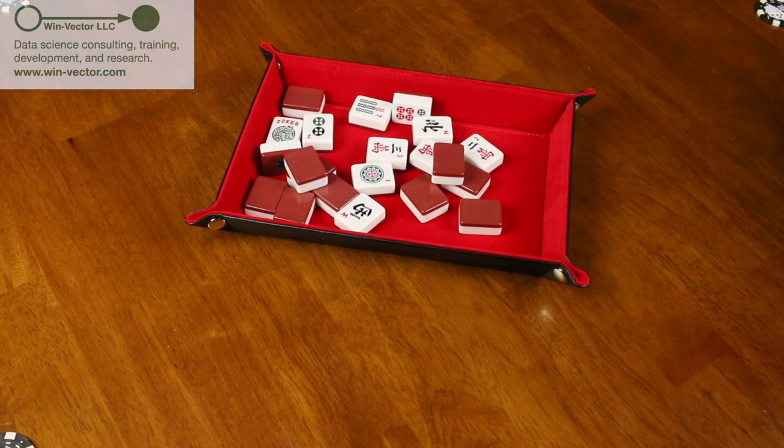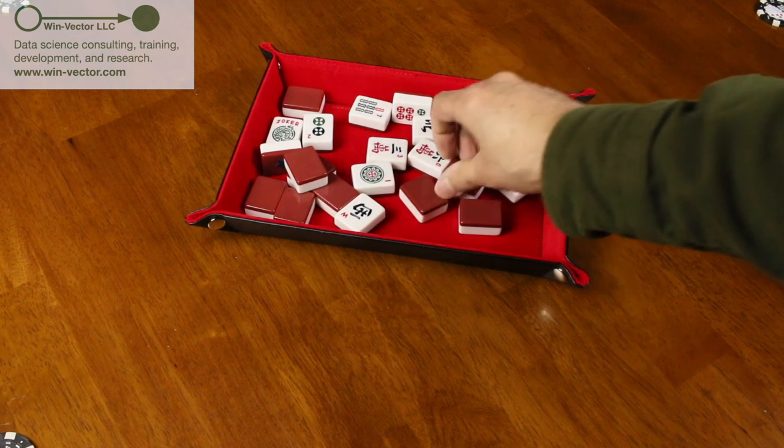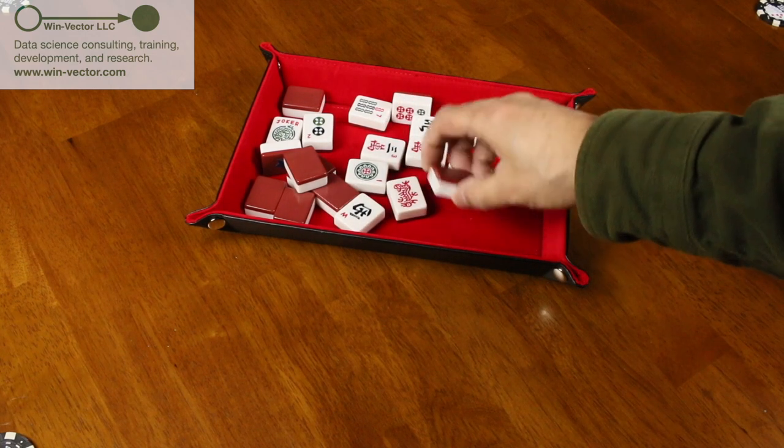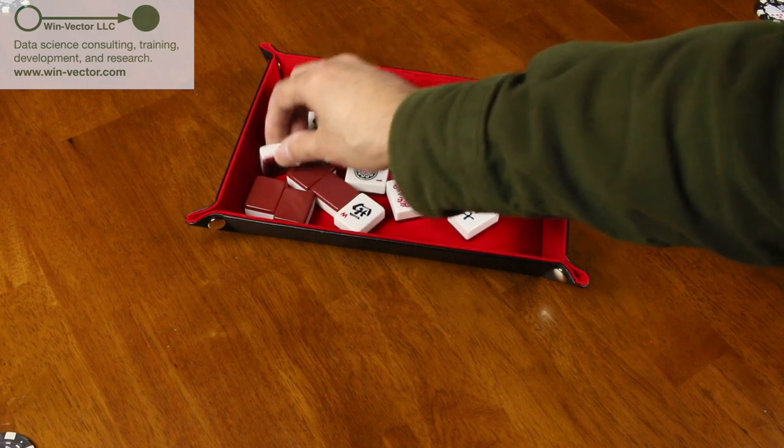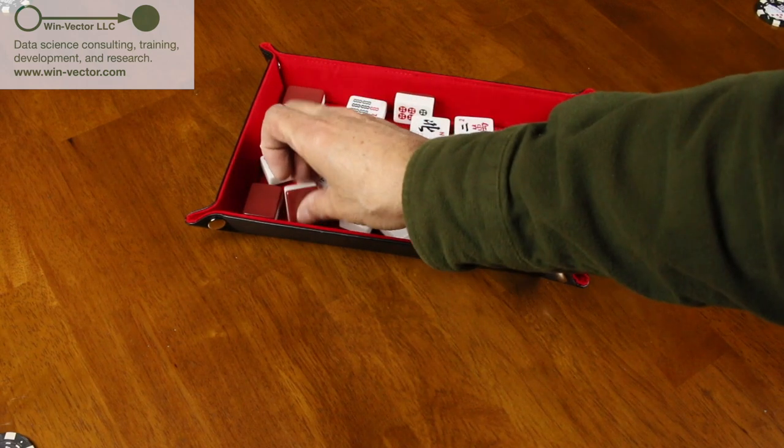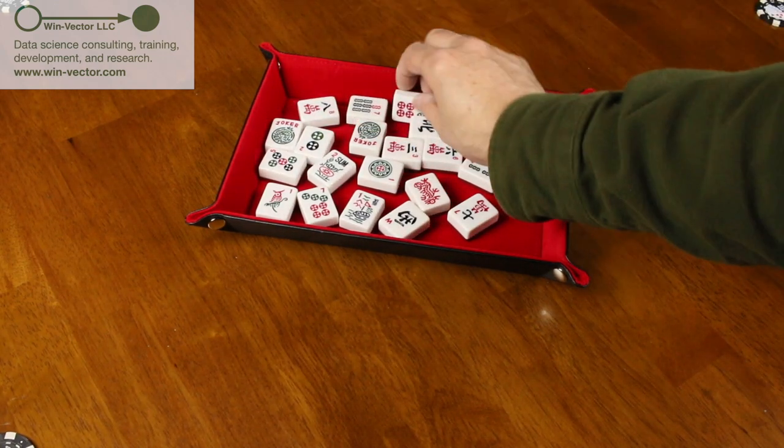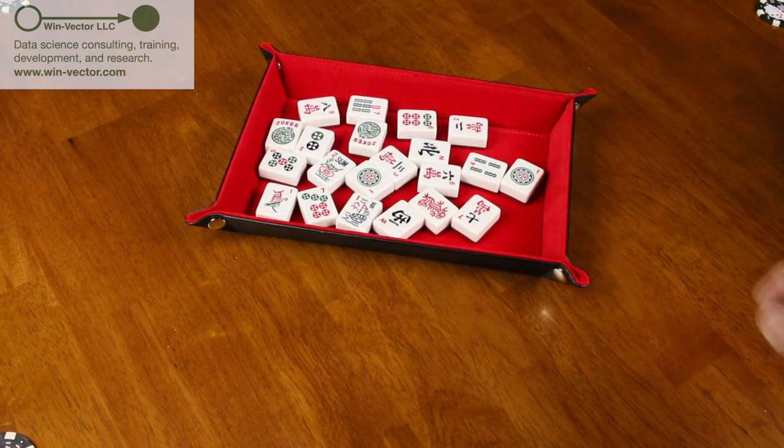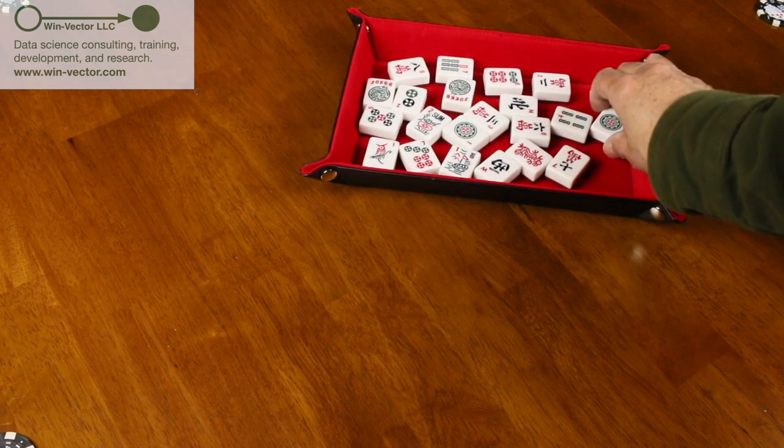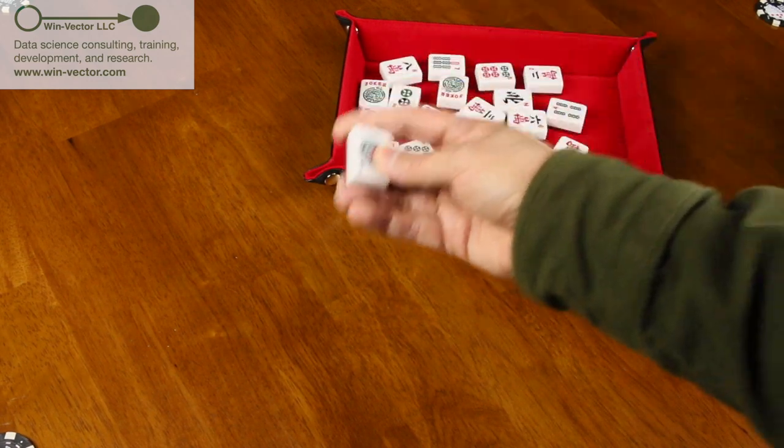So here we've drawn a visible sample from our population and we have all the observable facts about the tiles. Again during training we know both the explanatory variables, the front of the tile, and the dependent variable or what we're trying to predict the back of the tile. If we always knew both we wouldn't need a model.